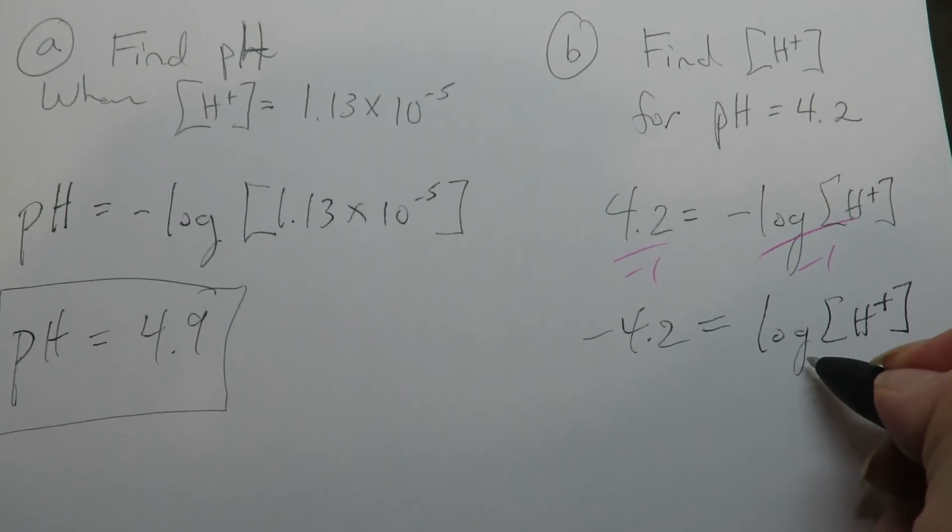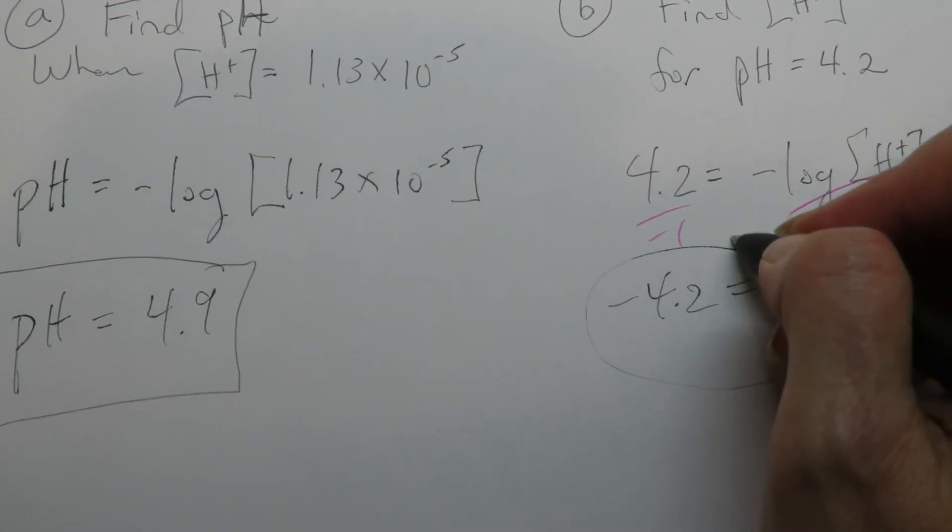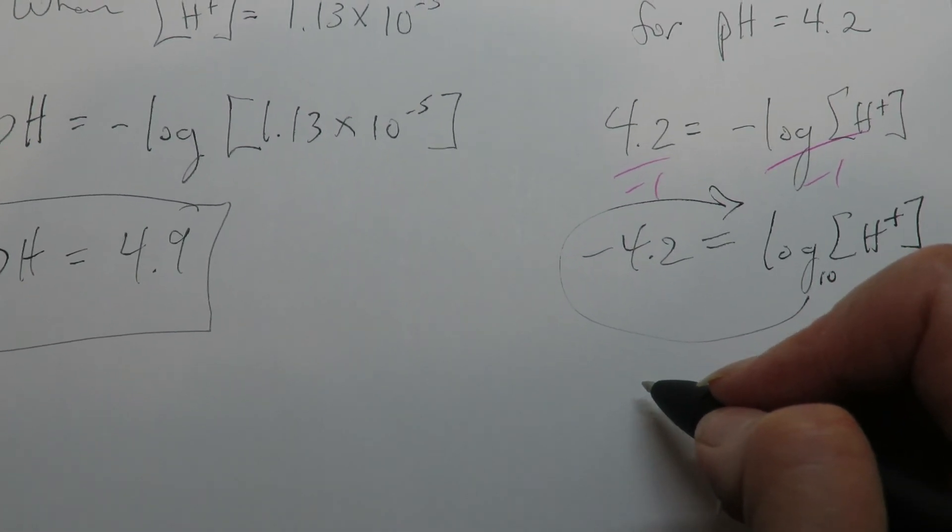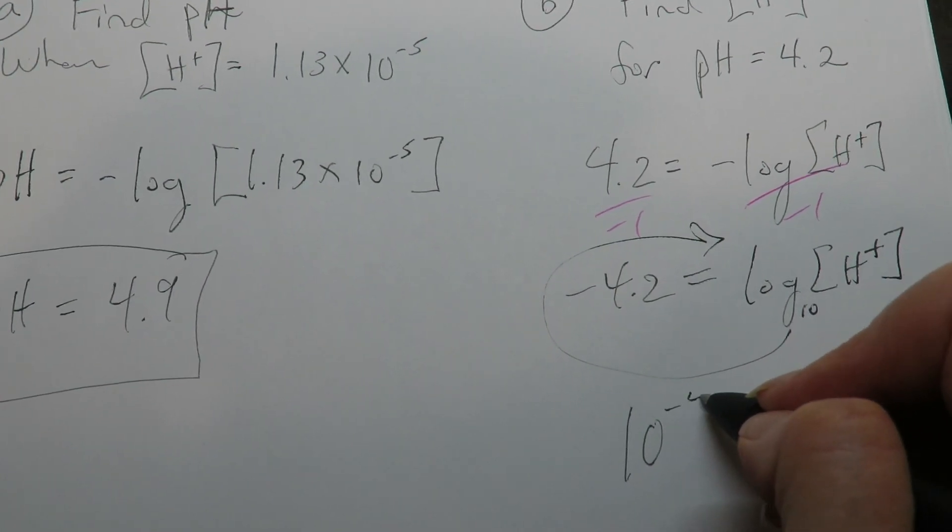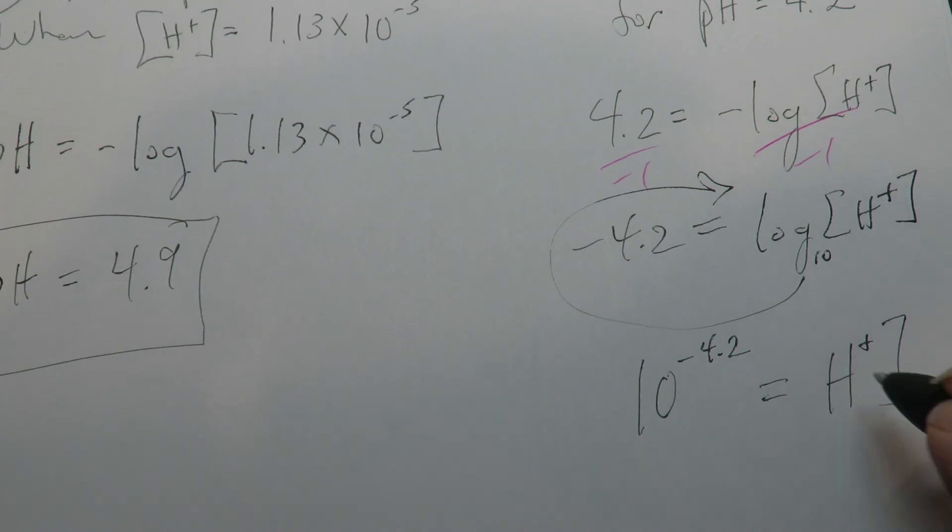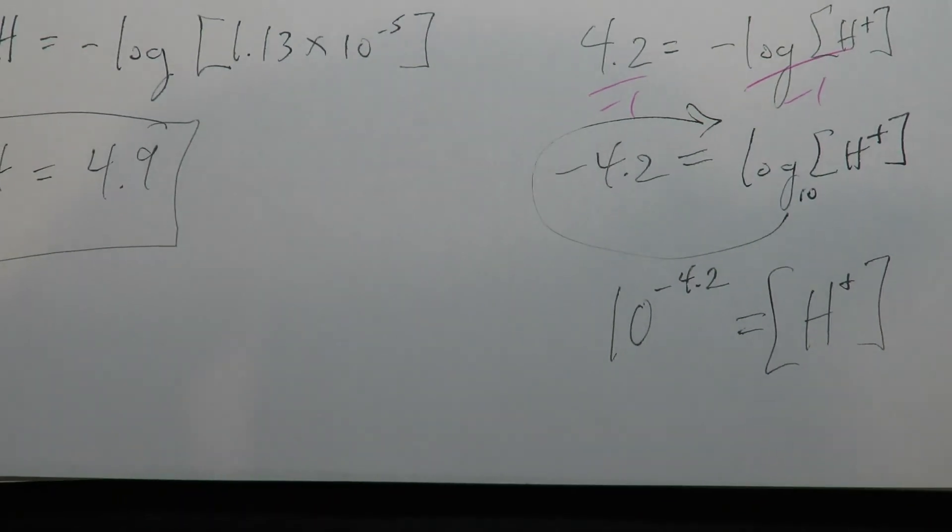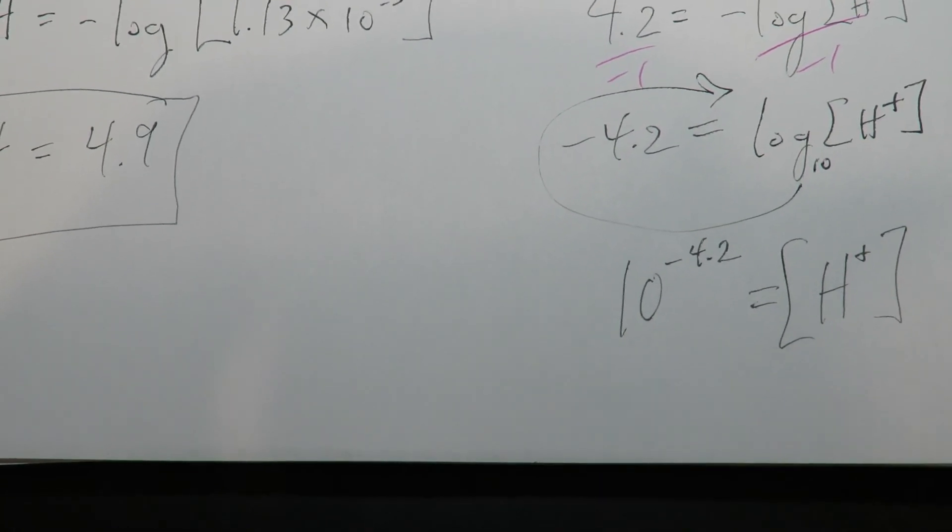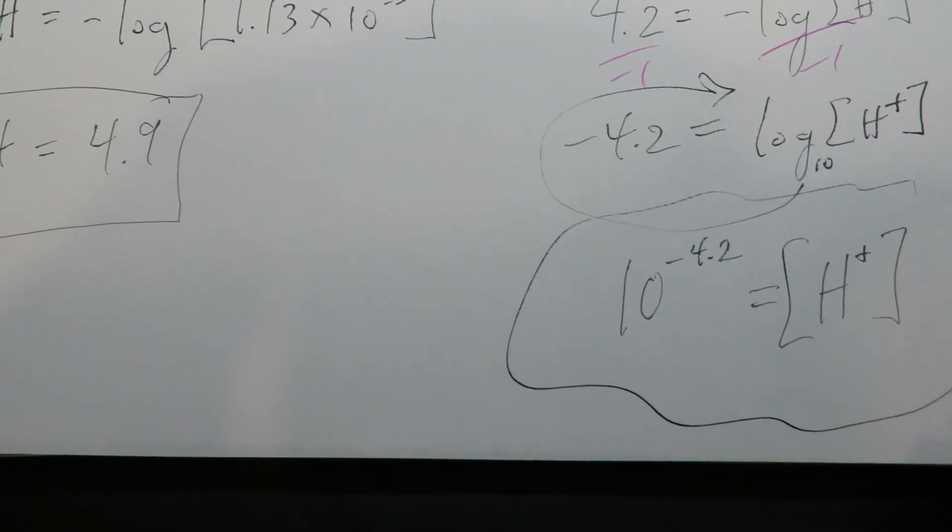Now this is base 10. So now remember, to solve a log, you're going to convert the form. So it's base 10 raised to the negative 4.2 equals to H plus concentration. You can convert that to a scientific number if you want, or you can just leave it like that. That would be fine with me.